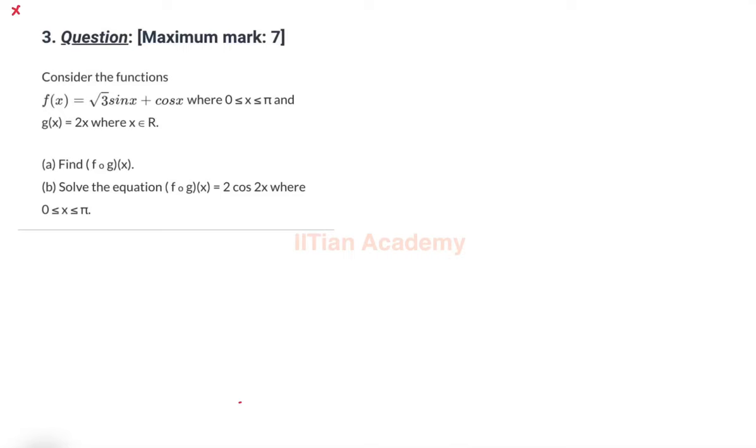Hello friends. We have a question on trigonometric equations. We are given f(x) = √3 sin x + cos x and g(x) = 2x.